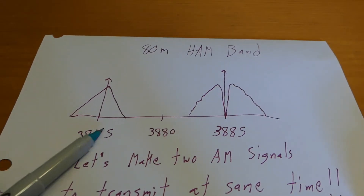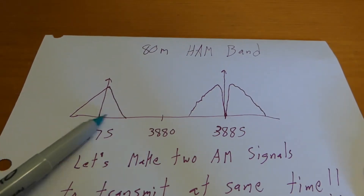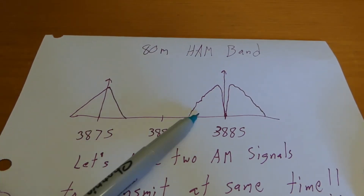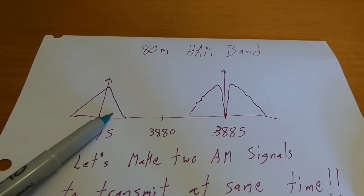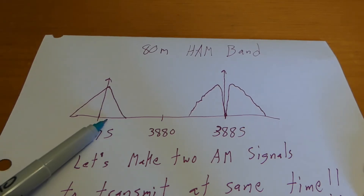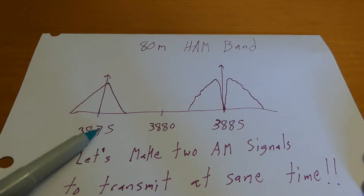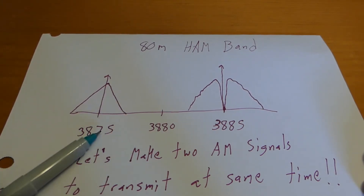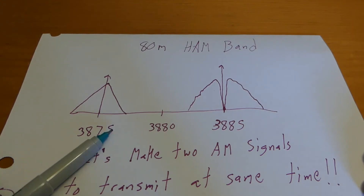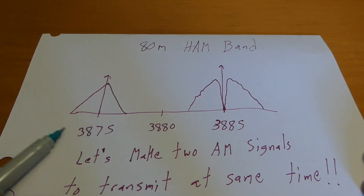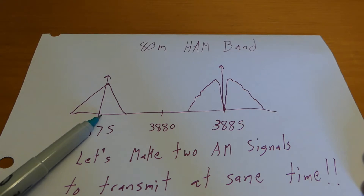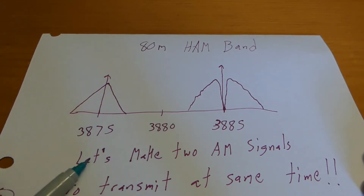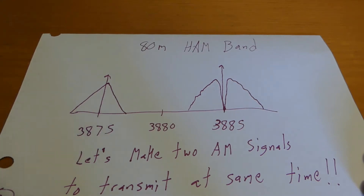What I want to do today is show how we can make two AM radio signals transmit at the same time. We're going to get into the IQ math and send this to our vector signal generator to generate two amplitude modulated signals at different frequencies simultaneously.